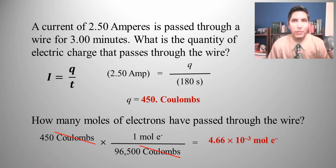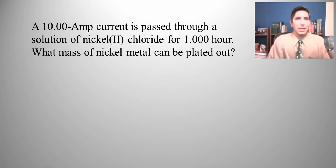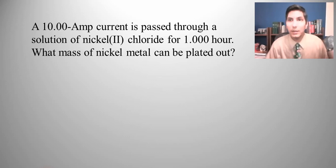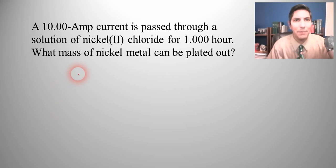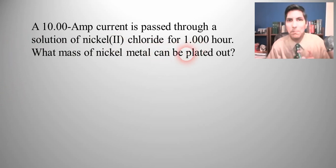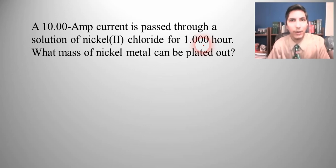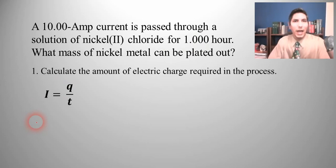Now let's try something more complex and practical. We have electrolysis taking place — producing nickel metal from a solution of nickel(II) chloride in an industrial process. We'll take a 10 amp current and pass it through the solution for one hour. What mass of nickel metal can be plated out? Let's figure out how many coulombs we're dealing with by plugging into I equals Q over T.